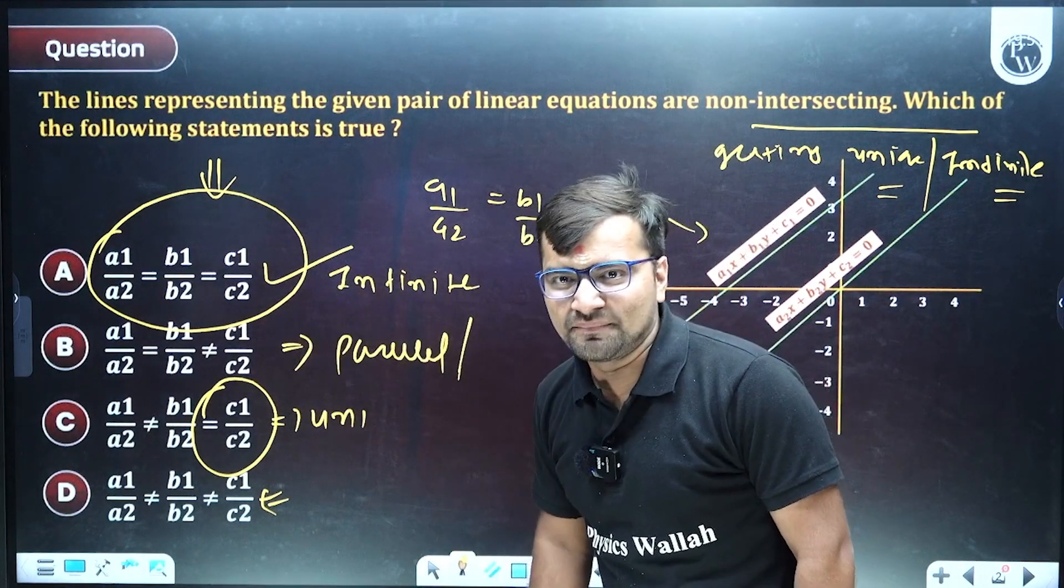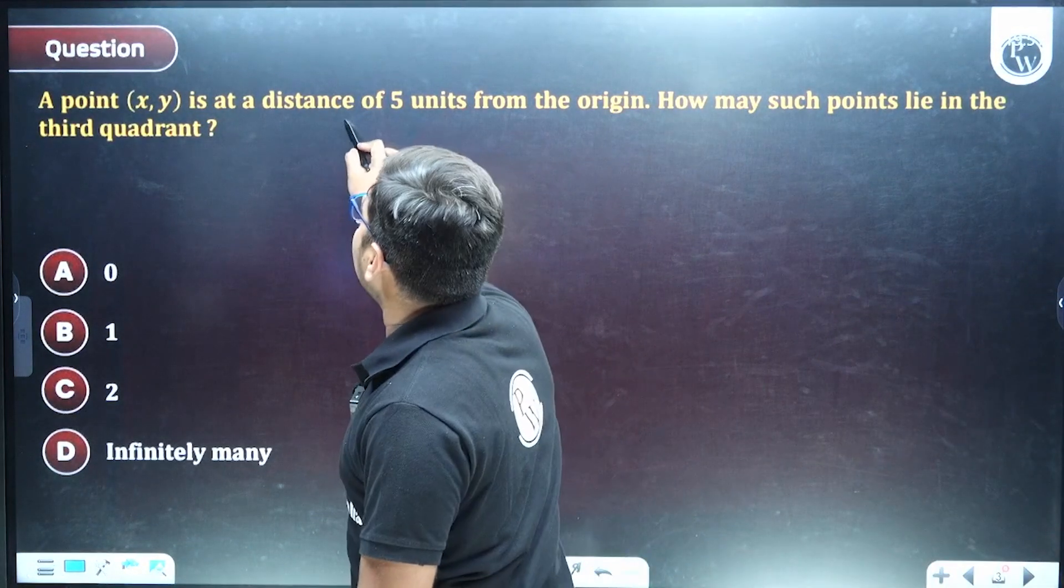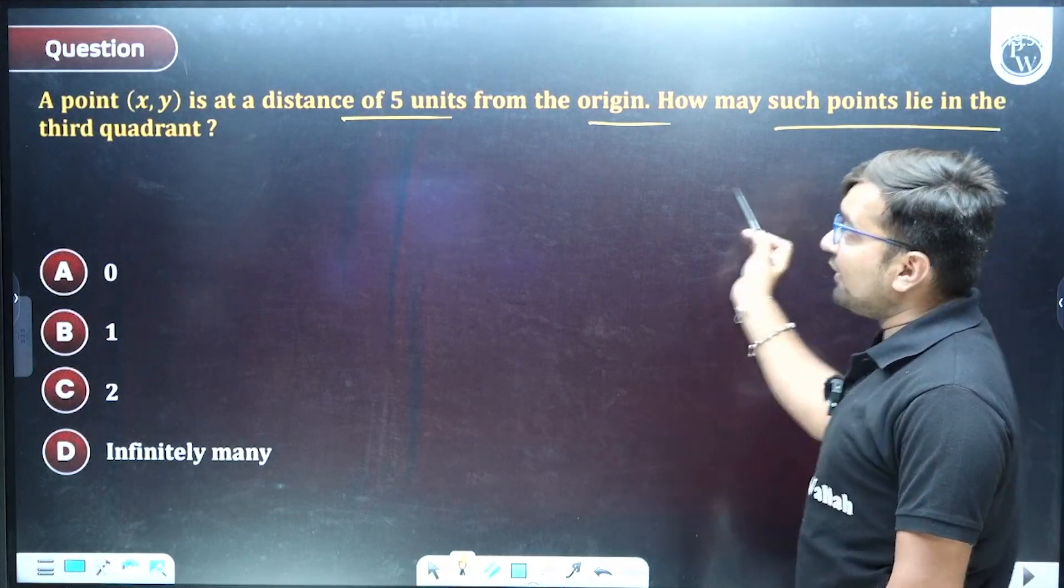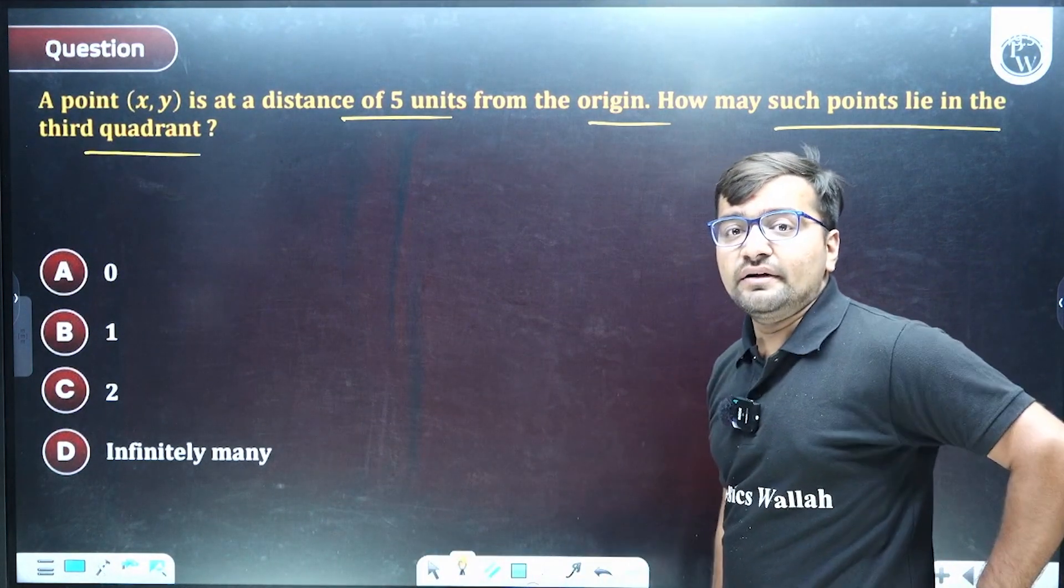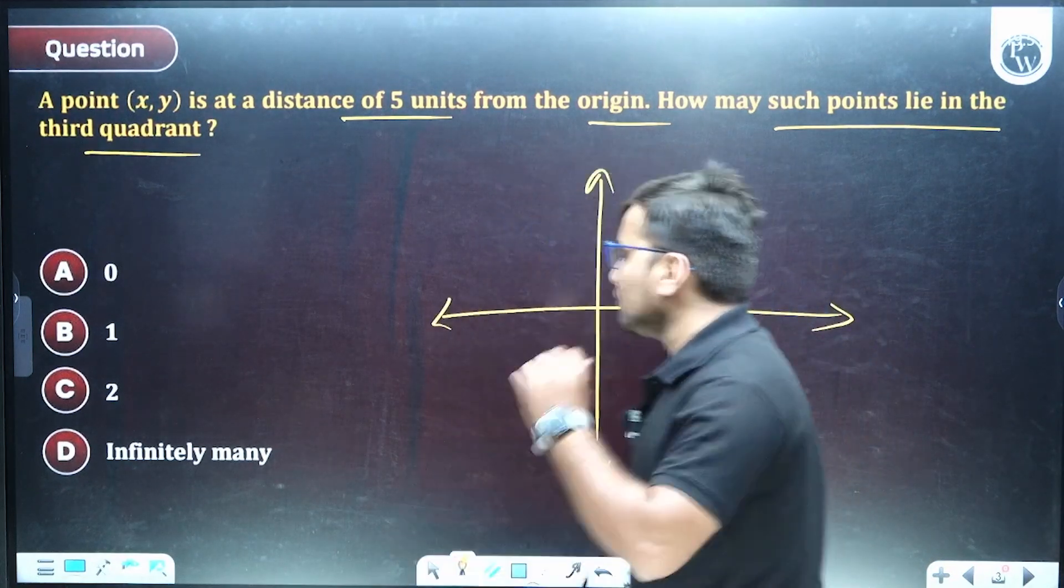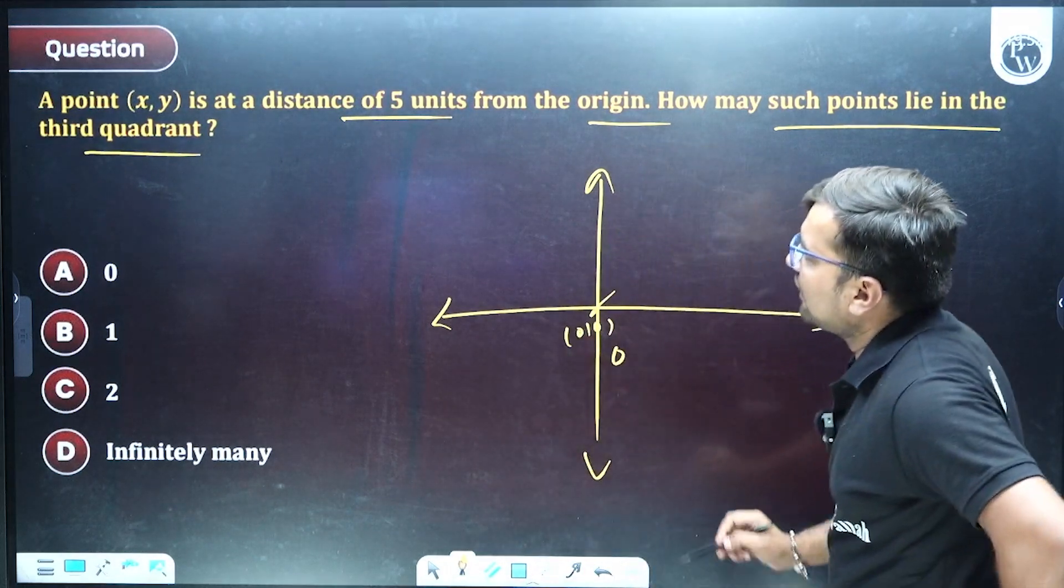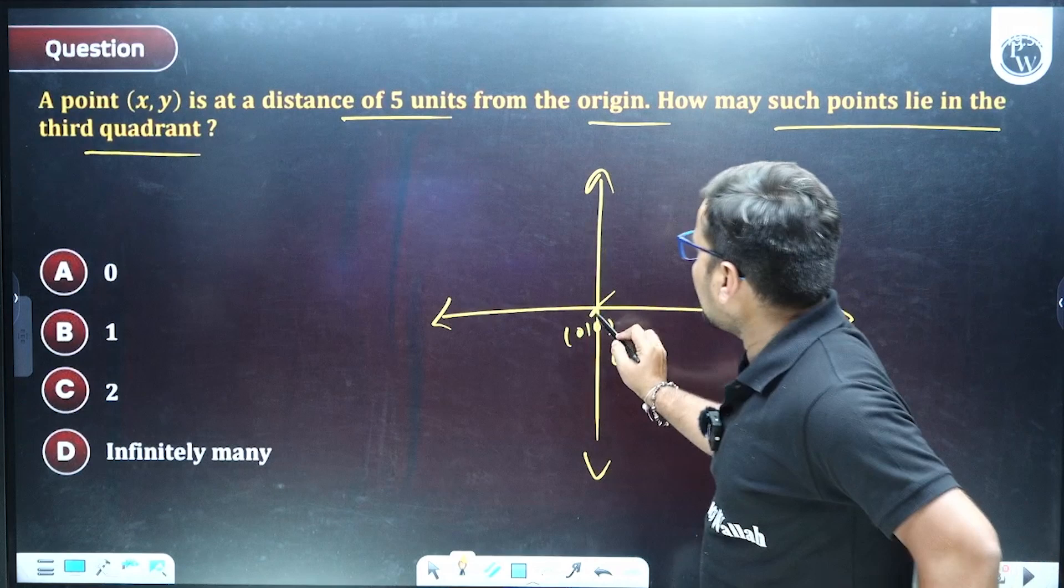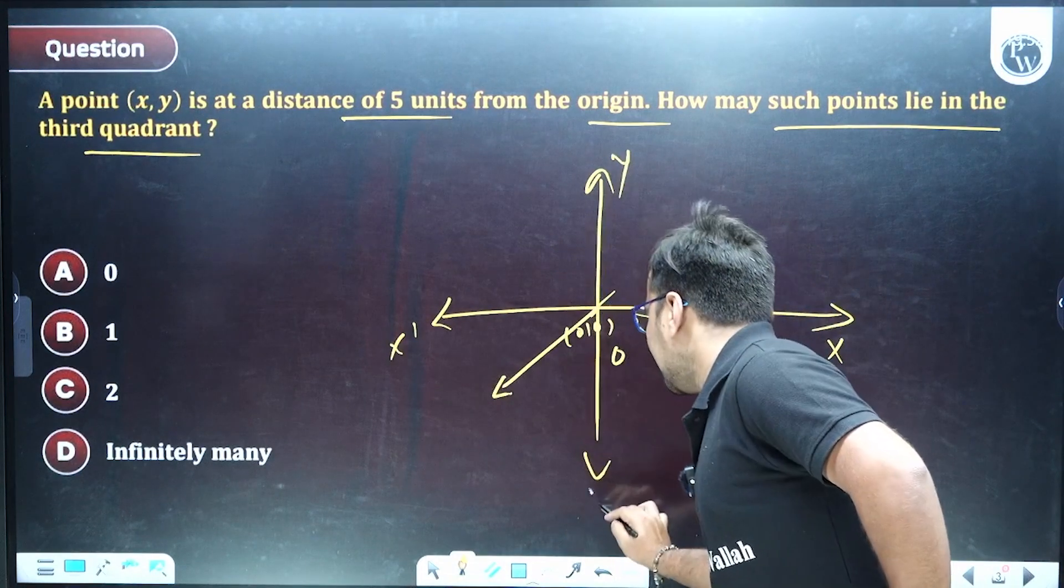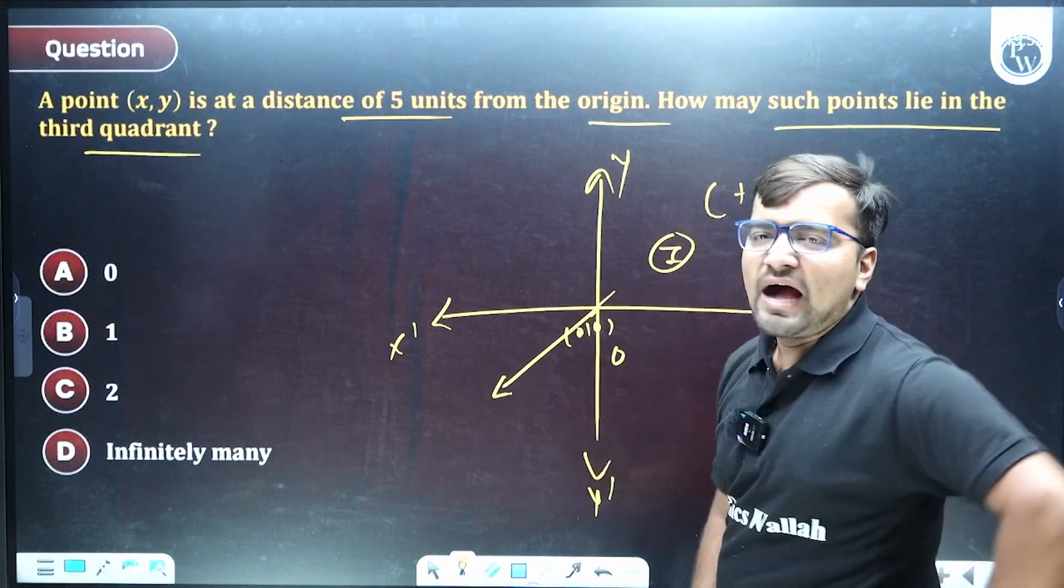So now second MCQ: a point (x, y) is at a distance of five units from the origin. How many such points lie in the third quadrant? Okay, it's a very important MCQ. Many students get confused. See, this is your origin O, and suppose in third quadrant this is your x-axis and this one is y-axis.